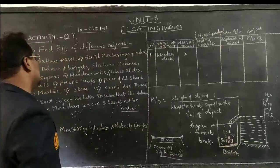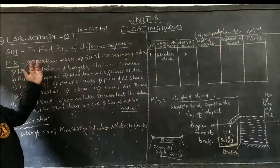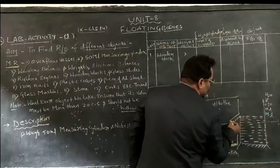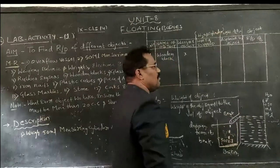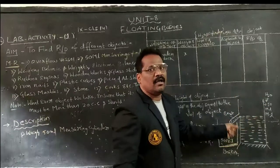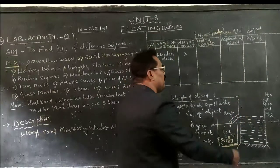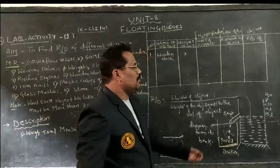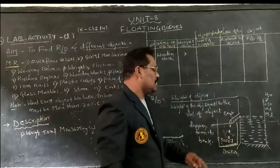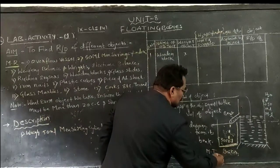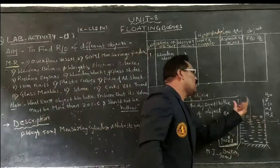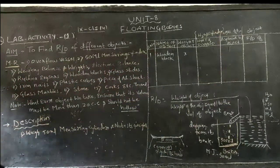Now let's look at the materials required. First is an overflow vessel — I have taken a beaker here. This beaker has a beak or spout. If I fill water up to the beak level and immerse any object — a wooden block, glass marble, aluminium sheet — depending on the weight of that object, water will overflow from the beak and collect in a measuring jar of 50 ml.